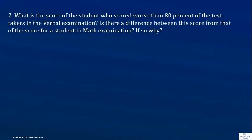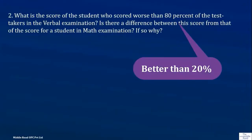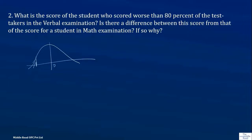The next question asks: who scored worse than 80 percent of the test-takers? Scoring worse than 80 percent means the person scored better than 20 percent. Better than 20 percent would be worse than 80 percent.